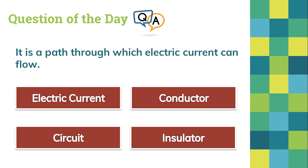The right answer is a circuit. If we take a look at electric current, it is the flow of electricity through a conductor. If we take a look at conductor, a conductor is the material through which electricity flows easily — it's like a channel to convey electricity.